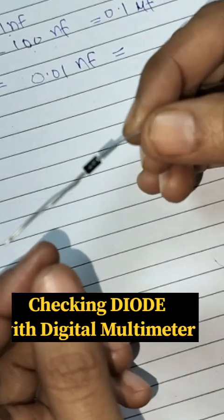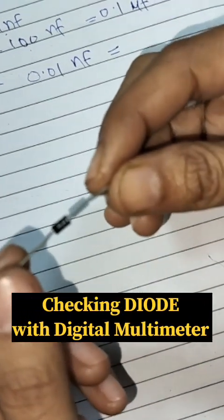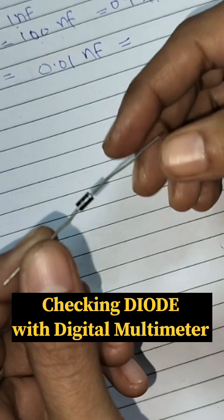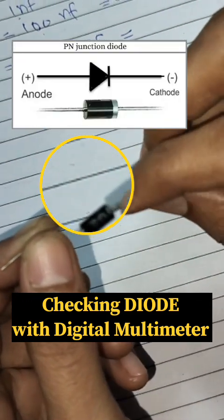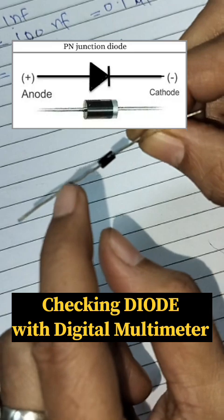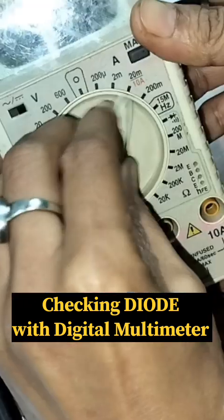Now we are going to check a PN junction diode. As you can see in this diode, here we have a silver band. This silver band side is the cathode and this side is the anode. We will rotate the knob of the digital multimeter to the diode position.